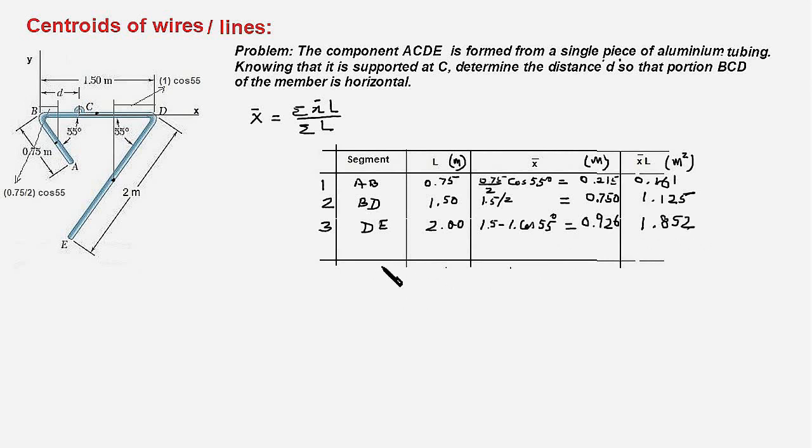Now we take sum of all the lengths, so Sigma L would be equal to 4.25. Sigma X bar L would total up to 3.138, and therefore X bar would be equal to 3.138 divided by 4.25, and this will be equal to 0.738 meters.